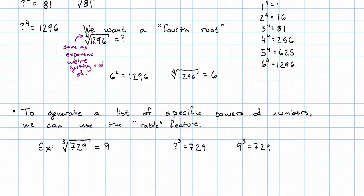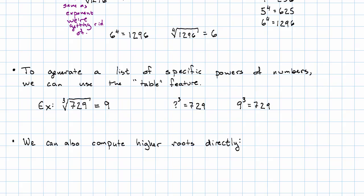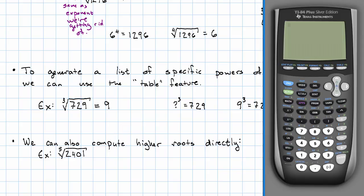We can also use our calculator to calculate higher roots directly. Say we wanted to take the fifth root of 2401. The higher root is in the math menu. To use it, first we enter this number called the index. So in this case, we want the fifth root.